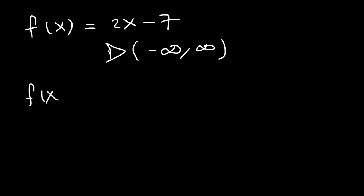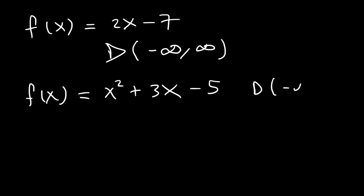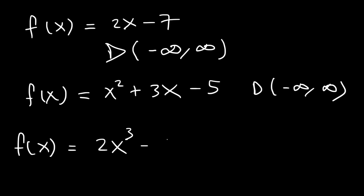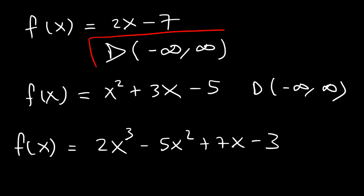Likewise, if you have a quadratic function like x squared plus 3x minus 5, the domain is still all real numbers. Or if you have a polynomial function such as 2x cubed minus 5x squared plus 7x minus 3, the domain is the same — it's all real numbers. So if there are no fractions or square roots, if you just have a simple polynomial function, this is going to be the domain.